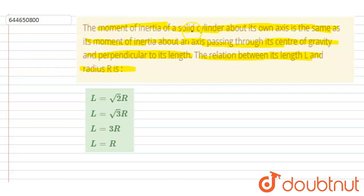About its own axis, the moment of inertia is the same as that of an axis passing through its center of gravity. Let me draw the diagram.